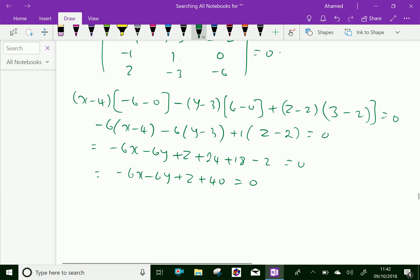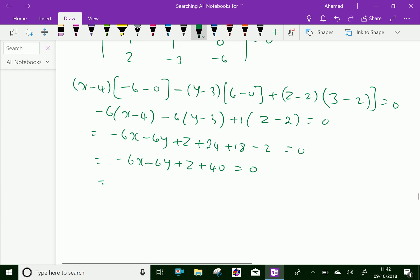Equal 0. Multiply with minus, we will get 6x plus 6y minus z minus 40 equal to 0 is the required equation of the plane. We have done. Please subscribe our YouTube channel.